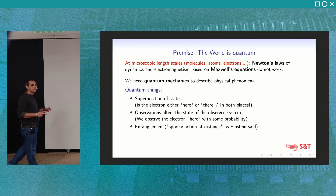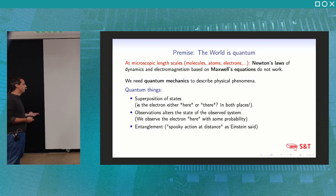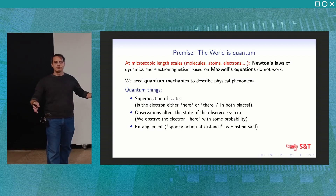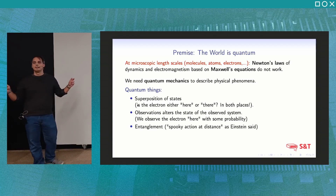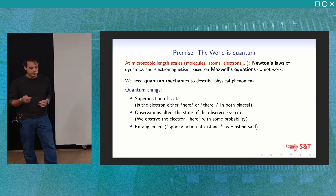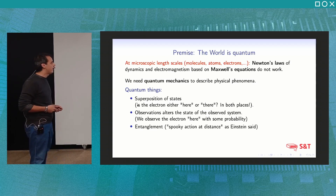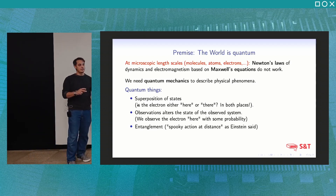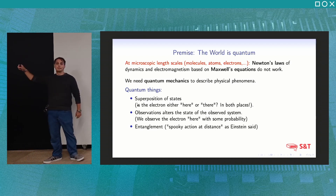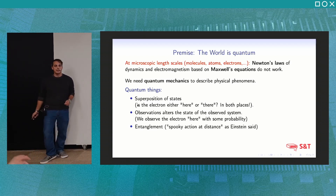Quantum features of a physical system are sort of counterintuitive. For example, the question is: is the electron either here or there, or in both places at least before a measurement process? This is not a naive interpretation — the common interpretation among scientists is that it's a fundamental feature of reality. Observations alter the state of the observed system; when we observe the electron, the state collapses to one position or the other. Quantum mechanics lets us estimate probabilities for each outcome of a measurement.